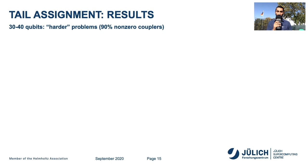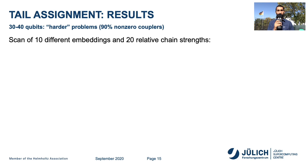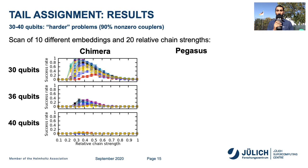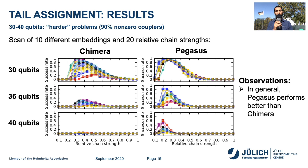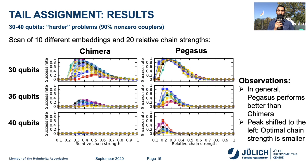Next, we implement harder problems consisting of 30 to 40 qubits with about 90% non-zero couplers. We scan 10 different embeddings and 20 relative chain strengths on Chimera and Pegasus for 30, 36, and 40 qubits. In general, Pegasus performs better than Chimera: as the number of qubits increases, the peaks in the graphs are higher for Pegasus than for Chimera, and the peaks shift to the left. For Chimera, peaks are close to 0.4, while on Pegasus they are close to 0.2. Thus, the optimal chain strength is smaller for Pegasus than for Chimera.